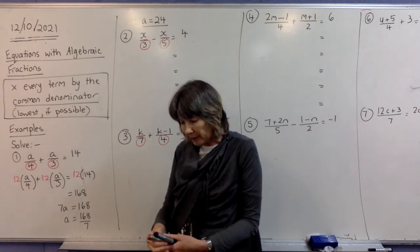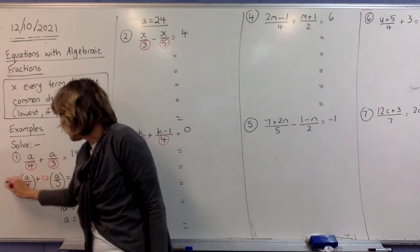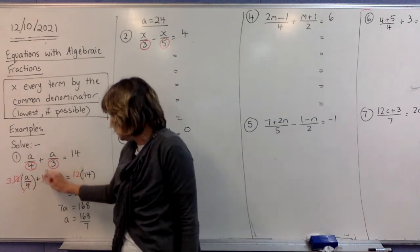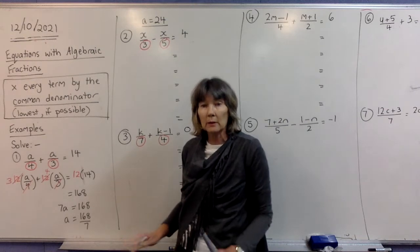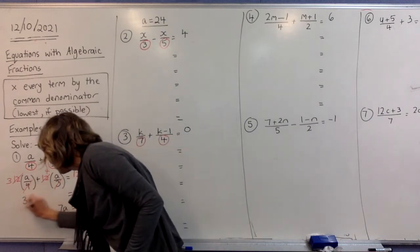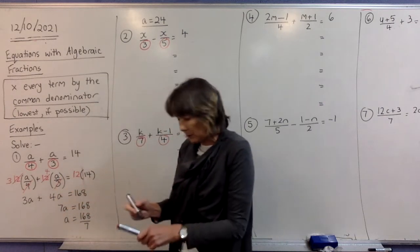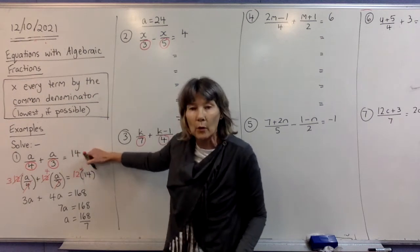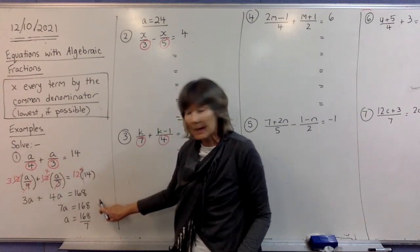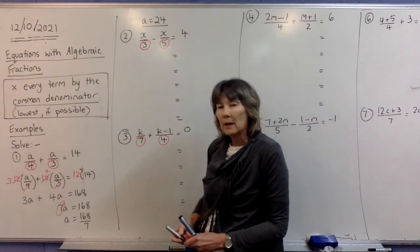Now we're going to cancel. This 4 is going to cancel with the 12 and leave you with a 3. This 3 will cancel with the 12 and leave you with a 4. After cancelling, we have 3 times a, which is 3a, plus 4 times a, which is 4a. Over here we have 12 times 14, which is 168. Collecting like terms gives us 7a equals 168, so a equals 24.